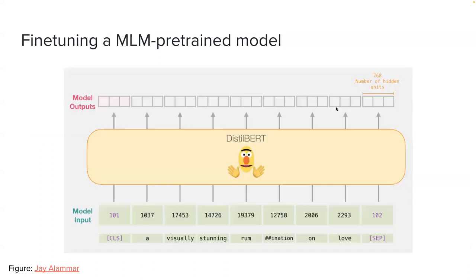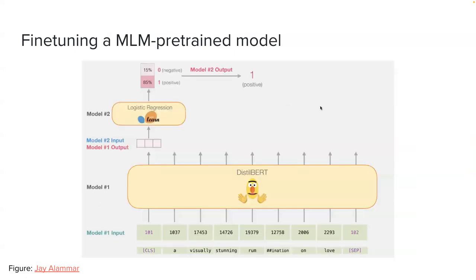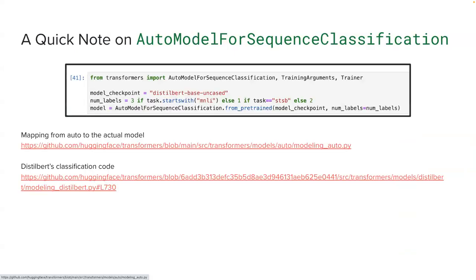This is just an illustration of what I said. You get the vector representation of the CLS token at the last layer — with BERT that's a 768-dimensional dense vector, meaning no zeros — and then you do standard logistic regression: multiply with the matrix, apply softmax, and so on.